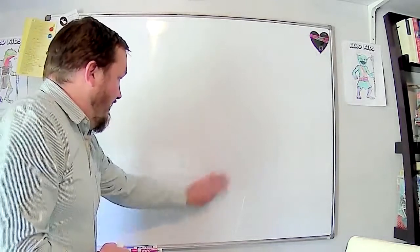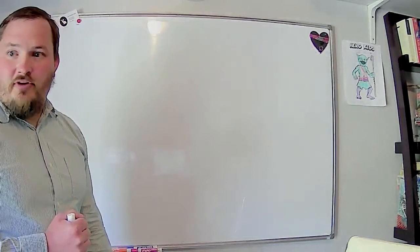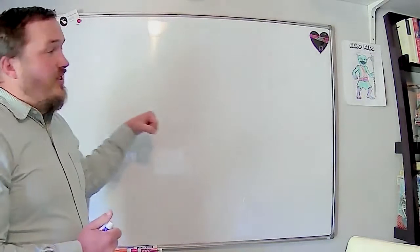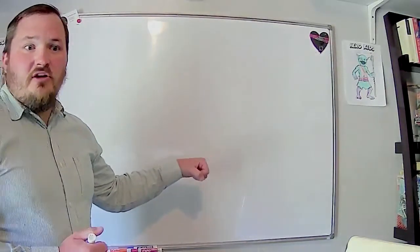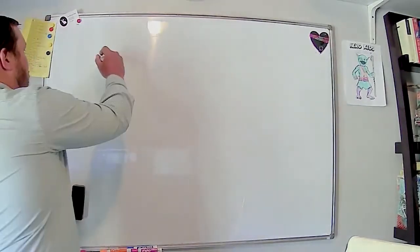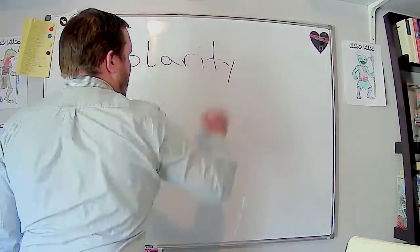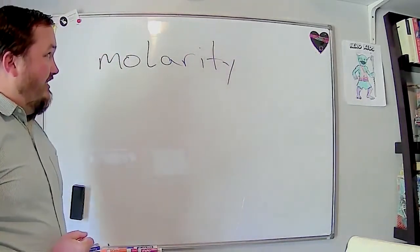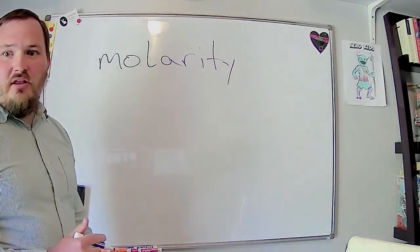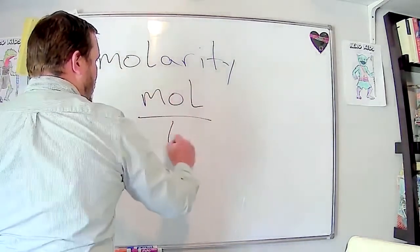Another example of a non-mole-based concentration would be something like grams of sugar per liter if you're making a simple syrup. But because we want things in moles, we use concentration units referred to as molarity. Molarity is the chemist's preferred concentration unit, and it literally just means moles per liter.